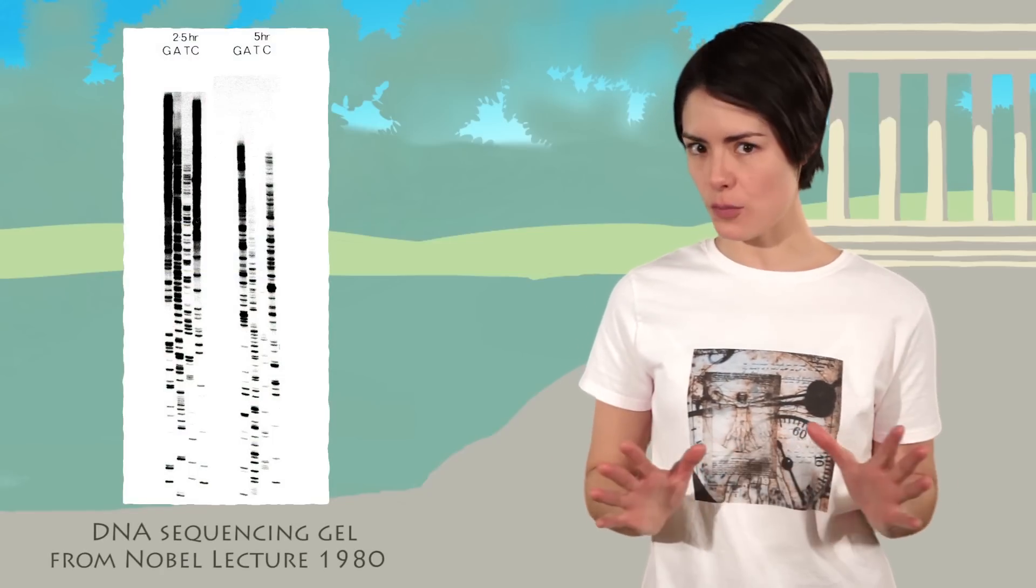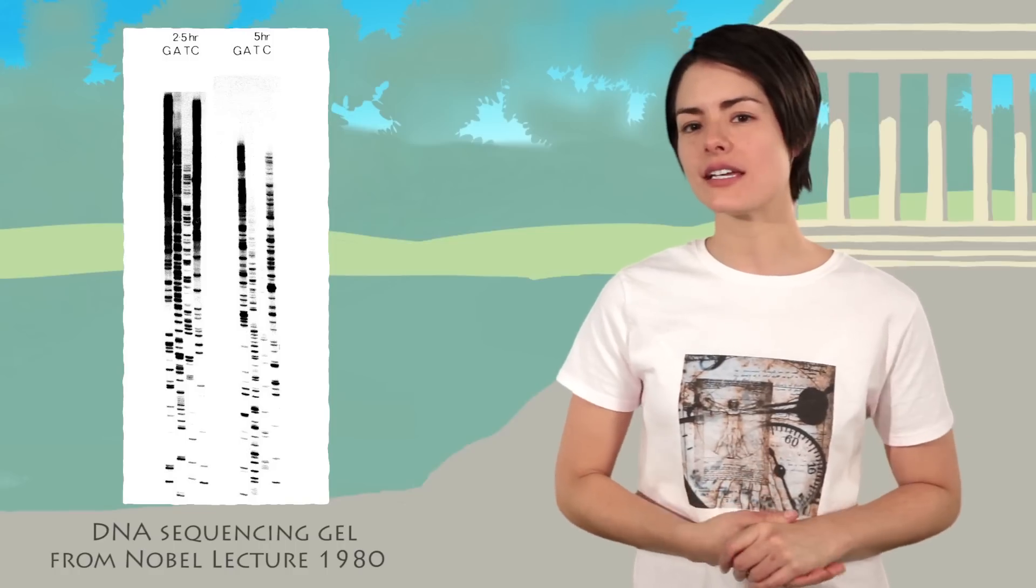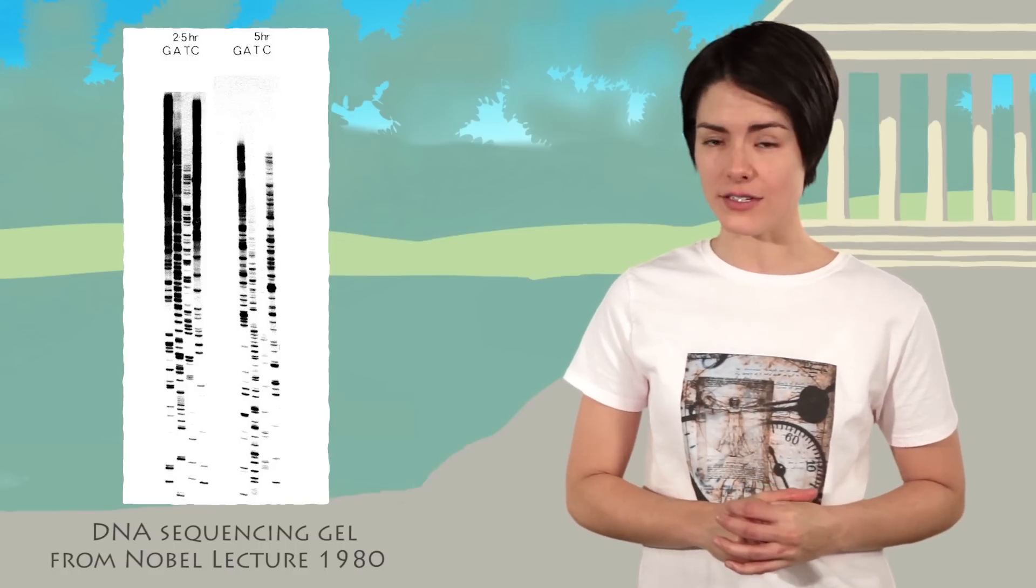Sanger went on to develop a more efficient technique for DNA sequencing, using modified DNA nucleotides which terminated the DNA strand during synthesis, creating fragments of different lengths. We call this technique the Sanger method, and it is one of the DNA sequencing methods still commonly used today.